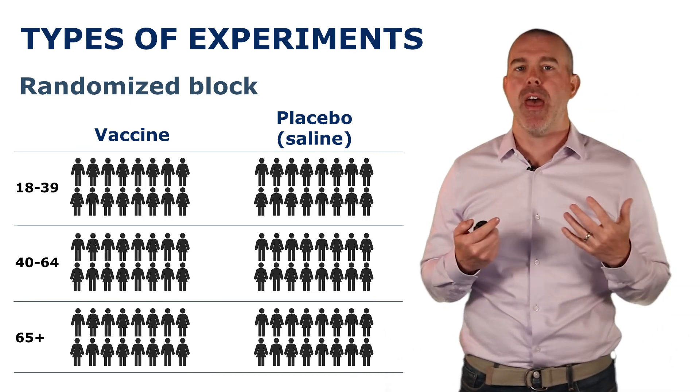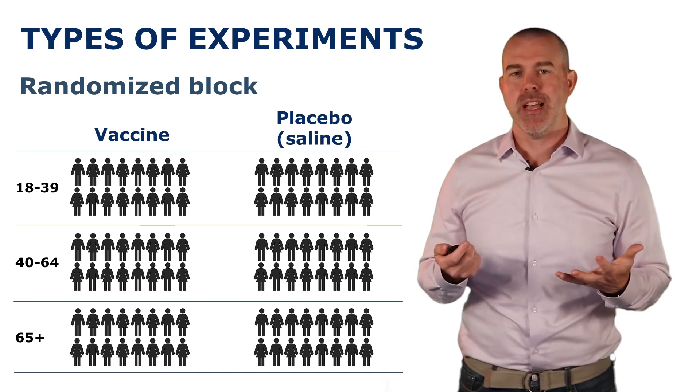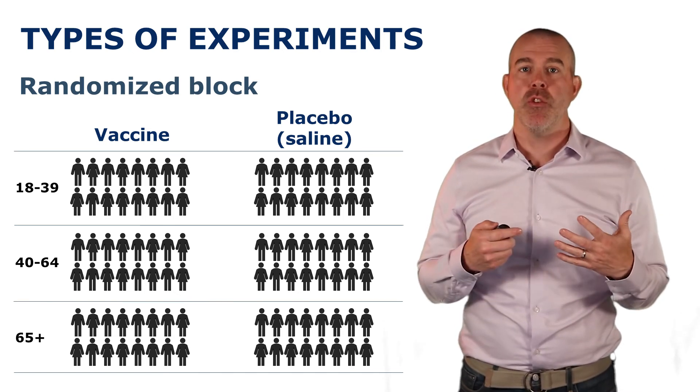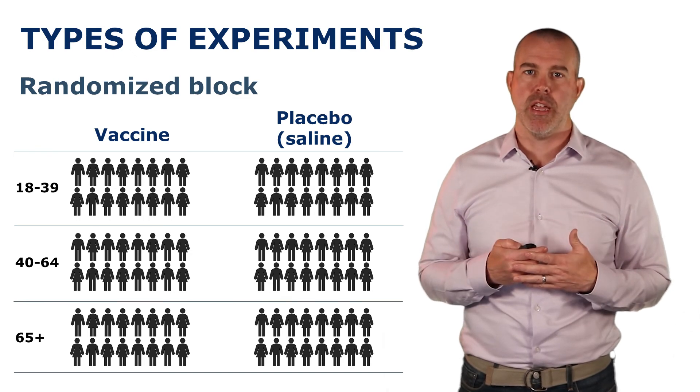This is basically stratified sampling where there's some criteria that you're interested in that you think might affect the results. So you actually break up by that group, whatever that criteria is. In this case, it might be age. And then you look at the results after controlling for age.